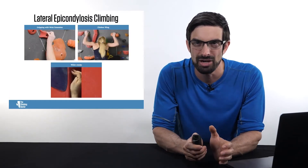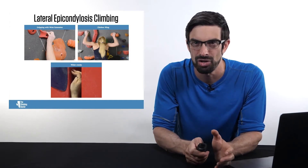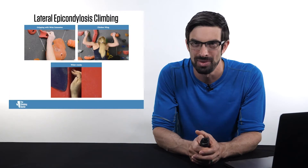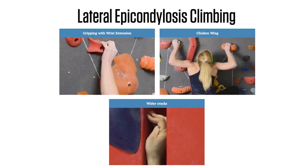If you think about different climbing movements that would generate or aggravate typical lateral epicondylosis, it's oftentimes movements that overuse extended wrist positions, such as the overuse of crimps or gripping with an extended wrist, or even chicken winging while climbing, or using wide cracks. These are all movements that may generate pain and symptoms in the lateral elbow.